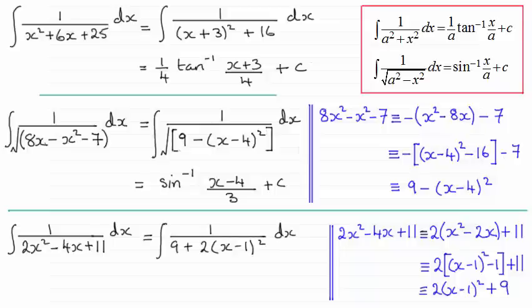So if I write this in then as the integral, we end up with 1/(9 + 2(x-1)²). And at this point you might want to make a substitution.